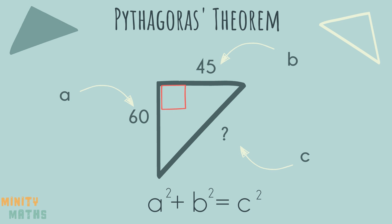Next we put the lengths of the sides we already know into the formula. The length of side a is 60, and the length of side b is 45. So here we have 60 squared add 45 squared equals c squared.